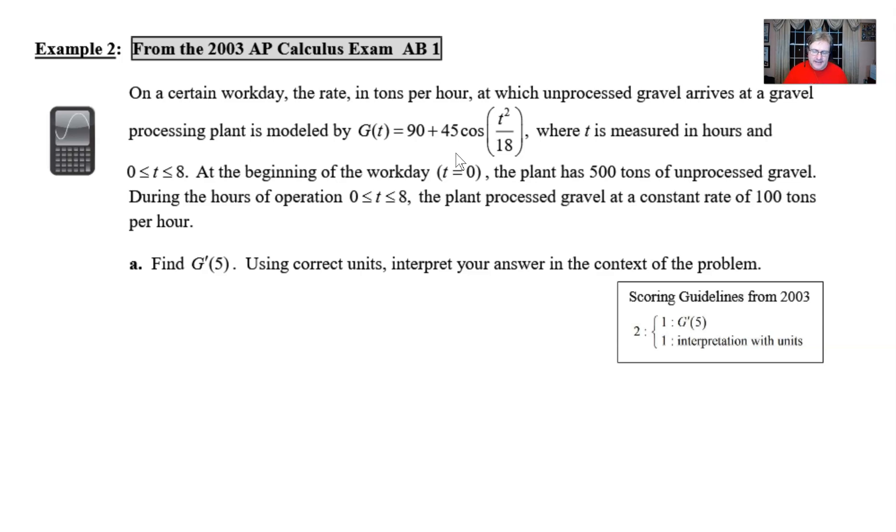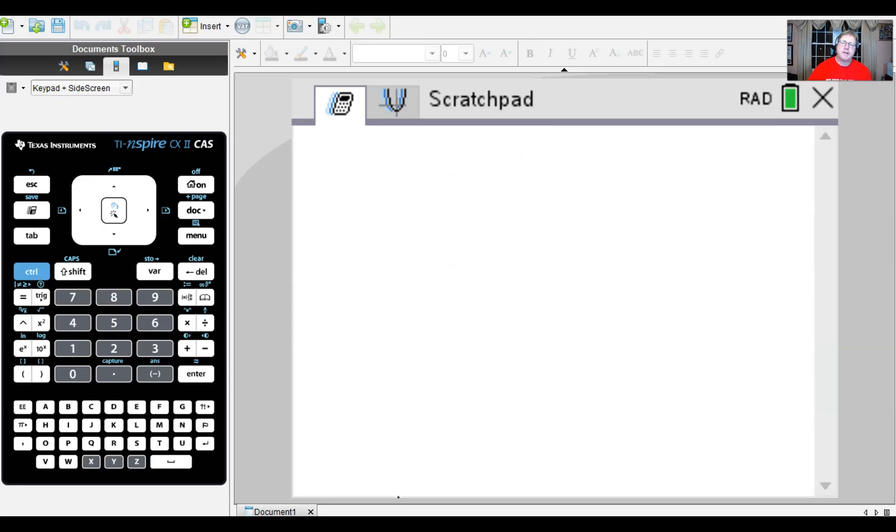So you're going to go ahead and grab that graphing calculator and let's figure out what g'(5) is. The calculator that I'm going to use of course is my TI-Nspire, but I want you to know that if you're out there watching and you don't own a TI-Nspire but maybe have a TI-84, which is probably the most common calculator out on the market, you can still do this.